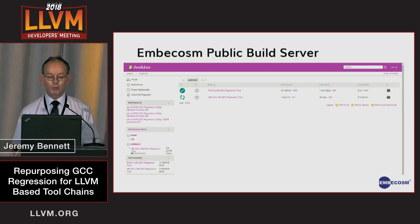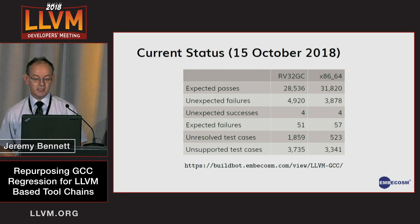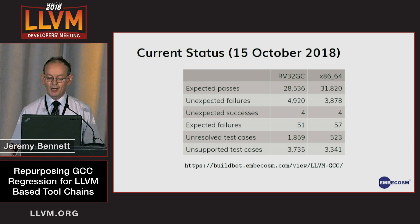So we've now got that running. There's an EmberCosm public build server where we're running these tests — the latest GCC regression tests for both 32-bit RISC-V and 64-bit x86. At x86-64, we've still got quite a few unexpected failures, because we're still working through which tests won't run on LLVM — whether we have all the attribute tests and feature tests in there. But it's a work in progress, and that's run nightly. You can see the latest tests from the link on the bottom.